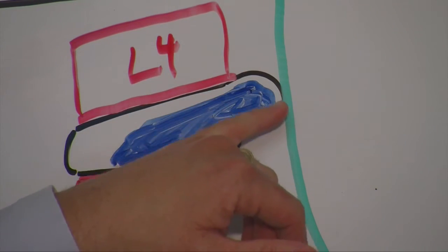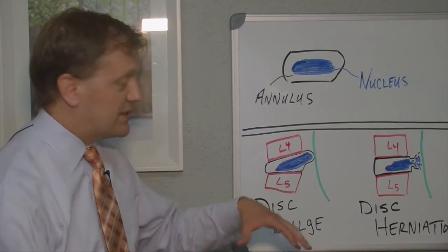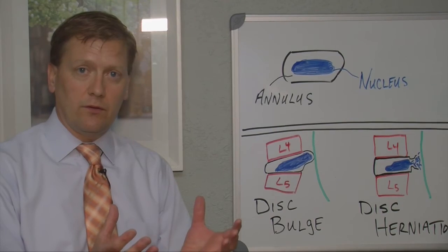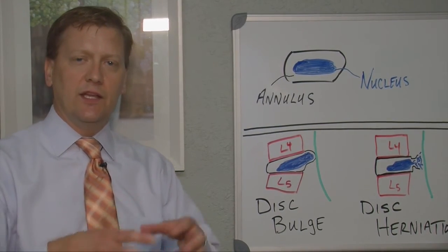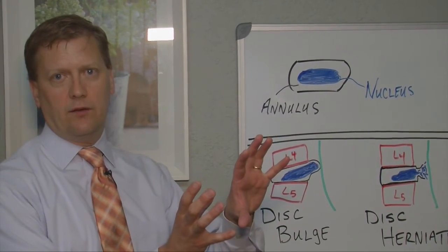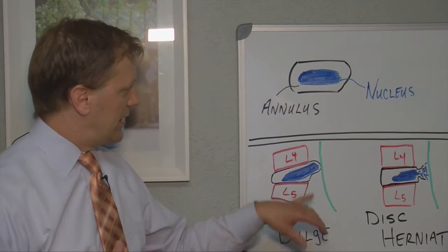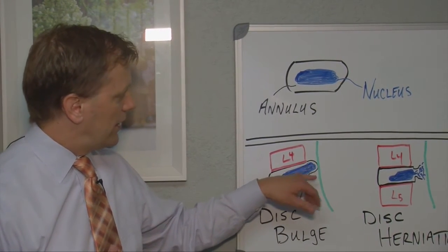It's maintained within the annulus, so the fluid stays inside—it's just all the fluid is now shifted to one side. That's called a bulge. Now if the bulge goes far enough, this green line that depicts the nerve root—